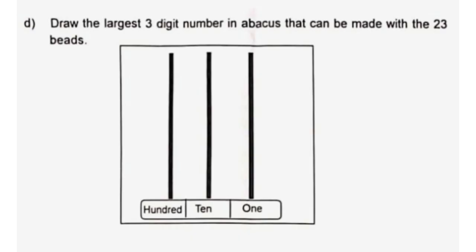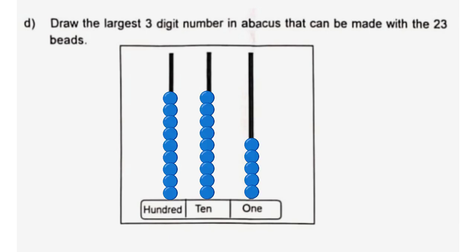D. Draw the largest 3-digit number in the abacus that can be made with 23 beads. The number will be 995.